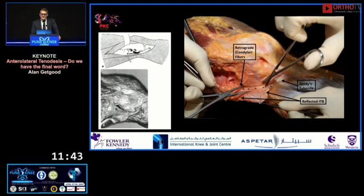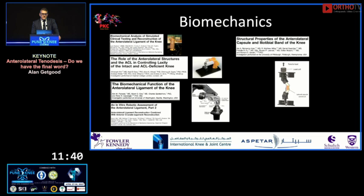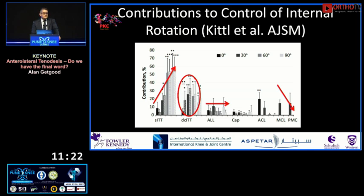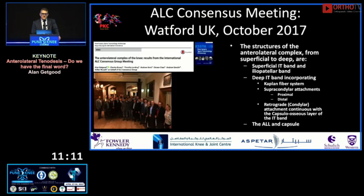The ALL sits within the anterolateral capsule. The biomechanics have been well investigated, and this graph tells the story clearly: the superficial IT tract controls internal rotation in deeper degrees of flexion; the deep capsuloosseous layer has a significant role through the range of motion; the anterolateral ligament has only a minimal impact; and the ACL's contribution decreases as you go from extension into flexion.